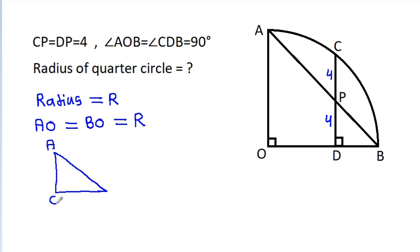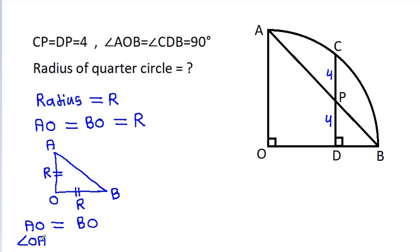In triangle AOB, AO is R and BO is R. Since AO is equal to BO, angle OAB will be equal to angle OBA. This angle AOB is 90 degrees, so these two base angles will each be 45 degrees.